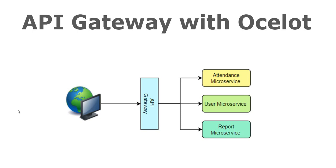Now this can also be done by a traditional load balancer, but the features of a traditional load balancer are very limited to what it can do. Whereas API Gateway is way beyond just routing.